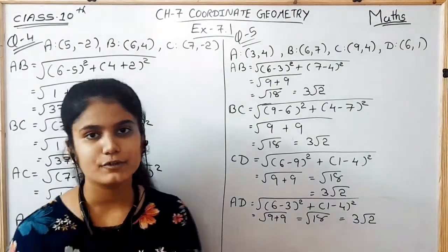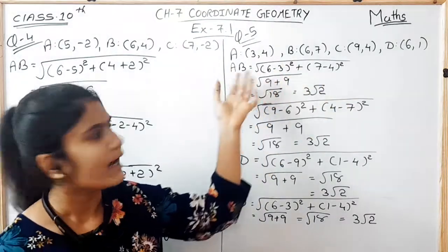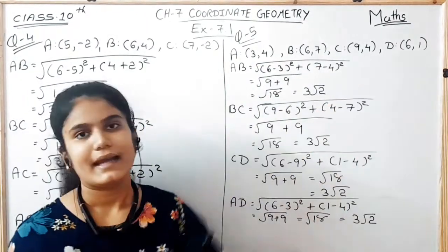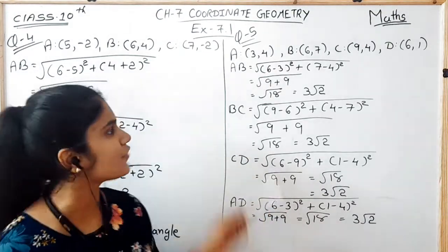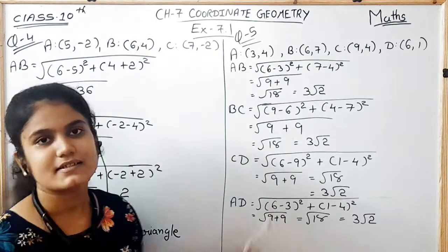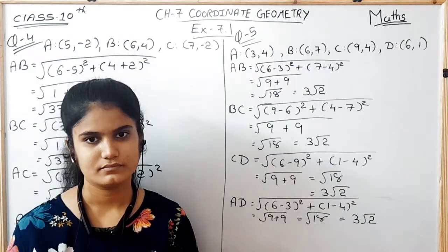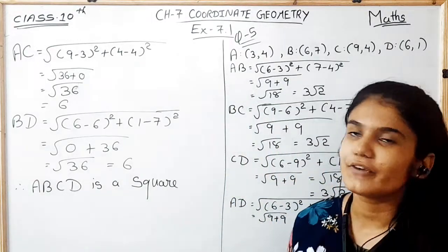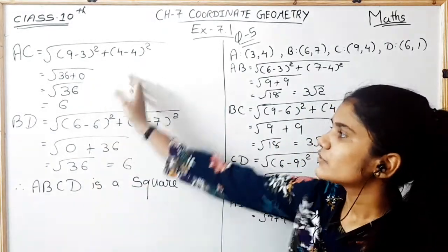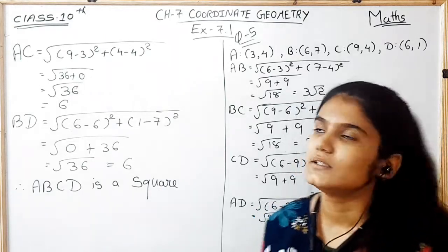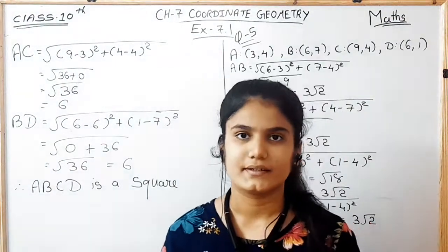In question number 5, we have to prove whether the given coordinates A(3,4), B(6,7), C(9,4), and D(6,1) form a square or not. First, we find the distances AB, BC, CD, and AD using the distance formula and all four are equal to 3√2. Further, we find the diagonals AC and BD. The diagonals are also equal, and all four sides are also equal. So the points A, B, C, D form a square — it is proven.